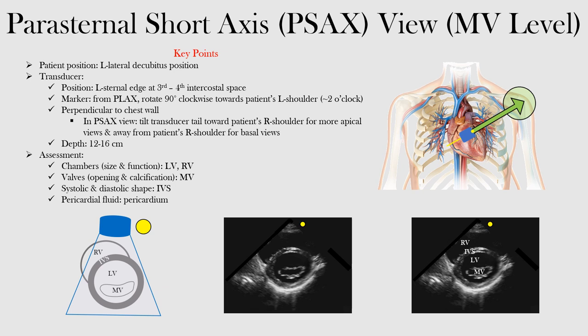We went from the parasternal long axis view — remember, this is the right shoulder and this would be the left shoulder. From the parasternal long axis view, what we did was shift 90 degrees, so now we have the transducer marker pointed and directed towards the patient's left shoulder.